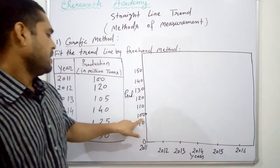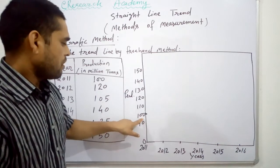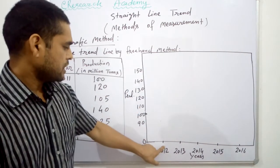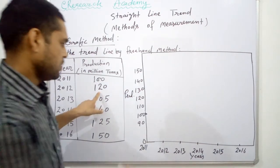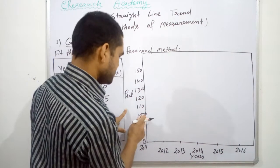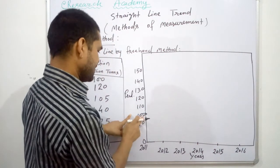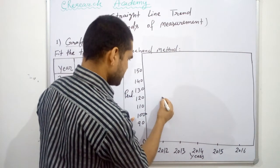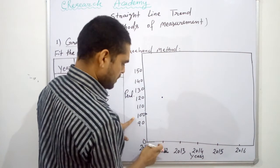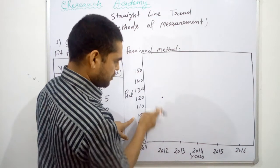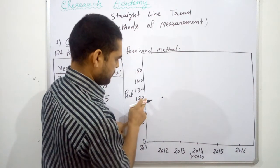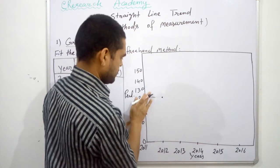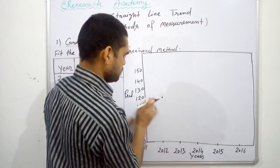Then we will move for the next year, 2012, and our production is 120 tons. This is 120, this is our origin of the series 2011, and for 2012 our production is this one, just above 2012 and in front of 120. So this one, this point is our production.